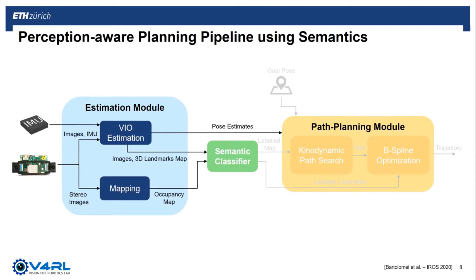The next step in the pipeline is the semantic classification step. The classifier requires as input the images and the 3D spatial information, with the objective of augmenting the available maps with semantic labels. The last component of the pipeline is the path planner. Given the robot's pose, the spatial information, and the destination, this module outputs a trajectory that navigates the robot towards the goal pose.